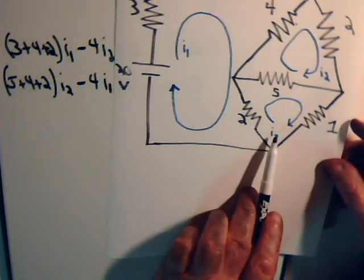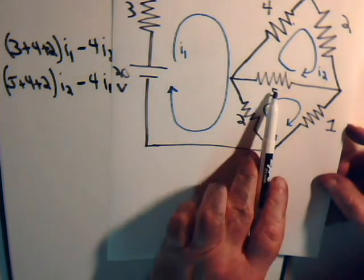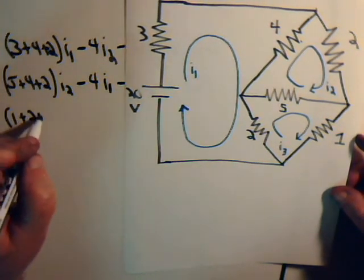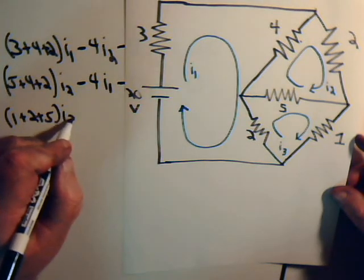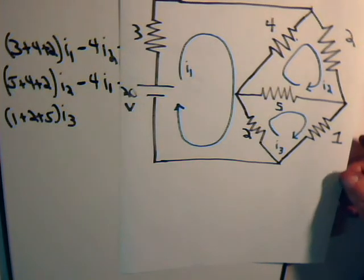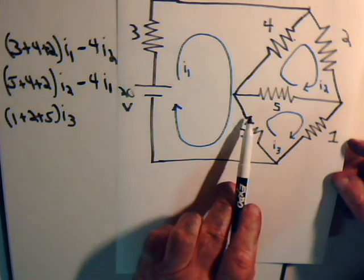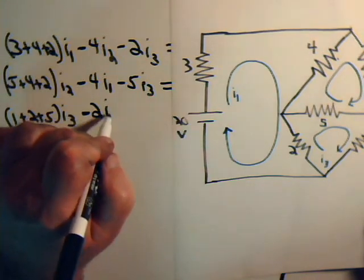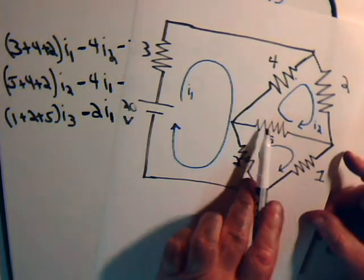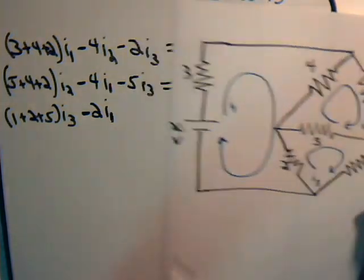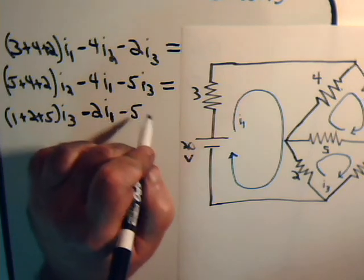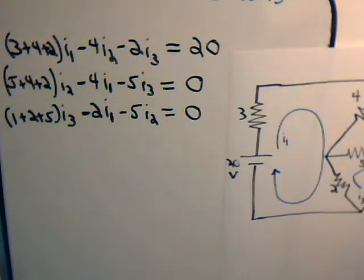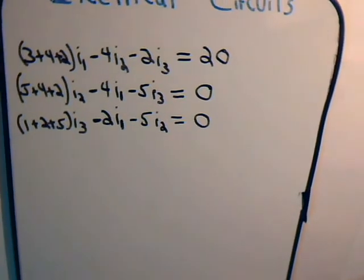In the third loop, current I3 goes through a two, five, and one ohm resistor. Going through the two ohm resistor, I1 flows in the opposite direction, so we have minus two I1. I2 flows through the five ohm resistor opposite in direction to I3, giving minus five I2. There is no voltage source, so this equals zero.